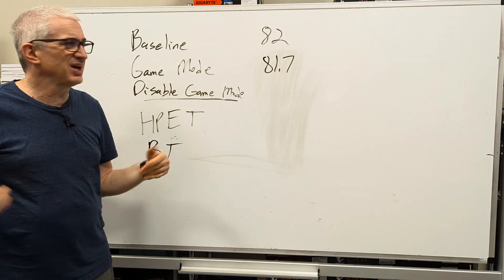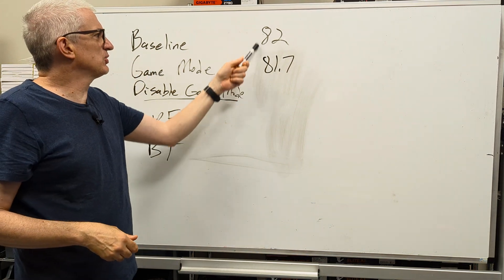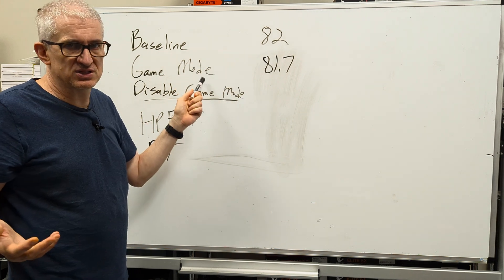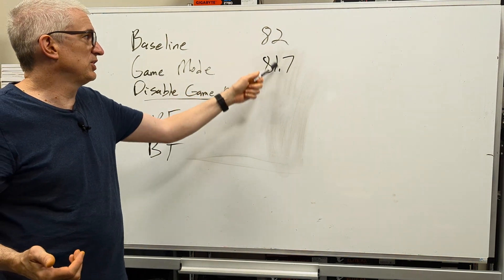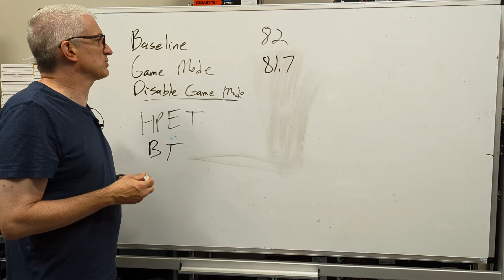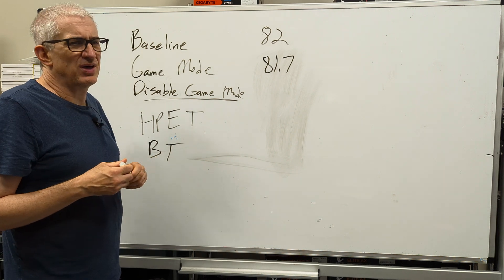So I did all that and the result I got was 81.7. And you may say, wow, that's worse. Not really. This is just a run to run variance. These numbers are essentially the same. And of course, you're never going to notice 0.3 frames per second.